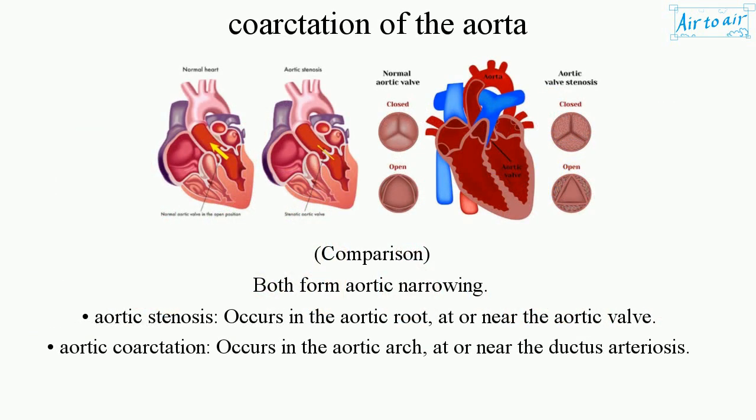Comparison — both forms cause aortic narrowing. Aortic stenosis occurs in the aortic root, at or near the aortic valve. Aortic coarctation occurs in the aortic arch, at or near the ductus arteriosus.